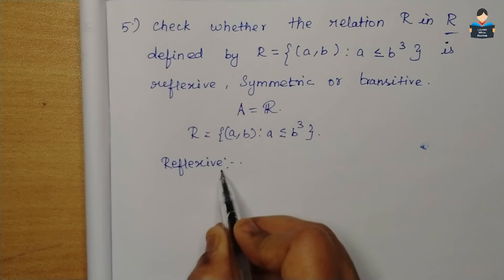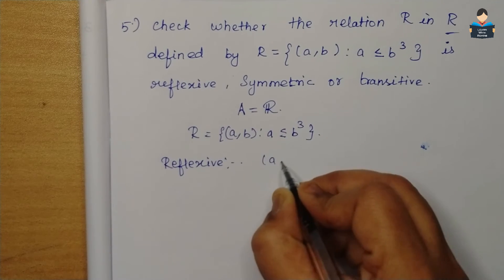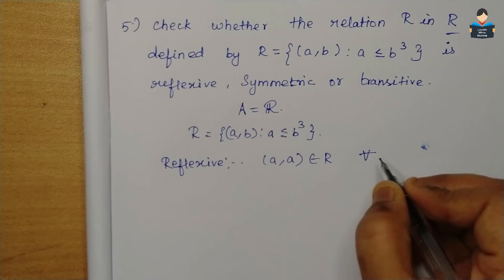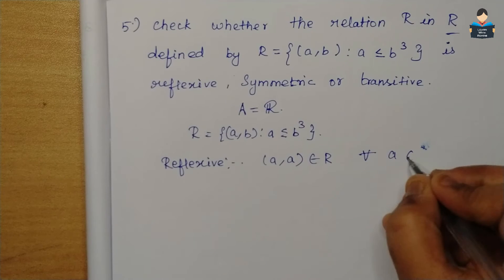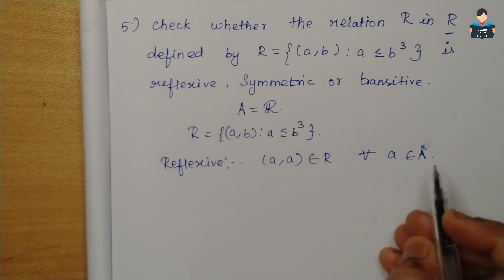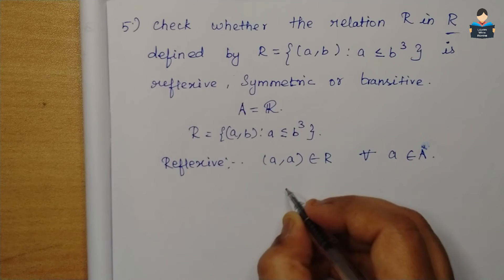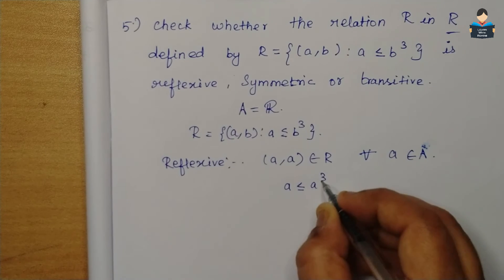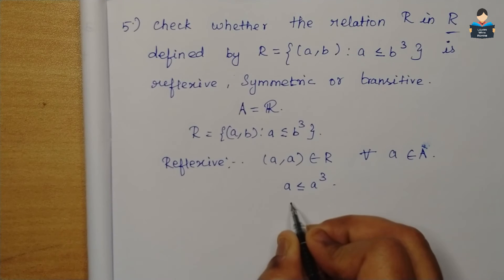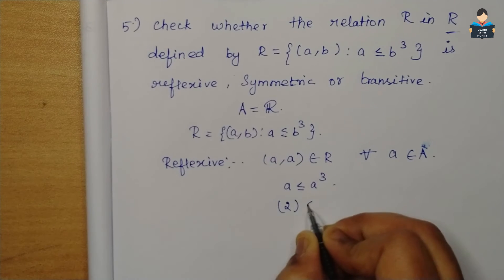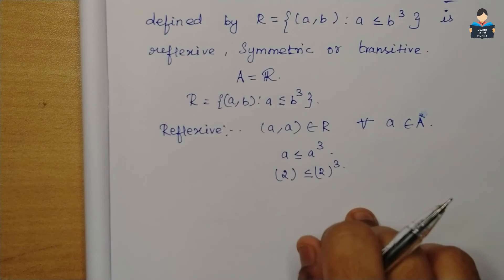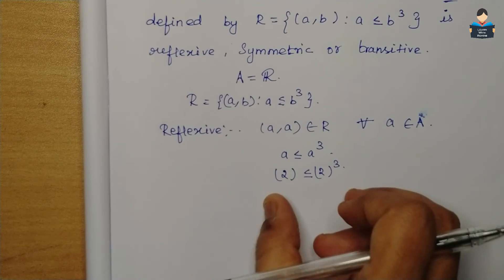First, check reflexive. Condition: (a,a) belongs to R for all a belonging to set A, i.e., real numbers. So the condition is: a is less than or equal to a³. For example, 2 is less than or equal to 2³.